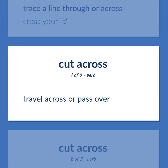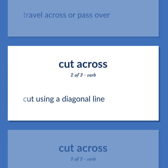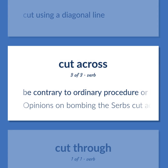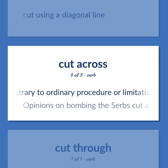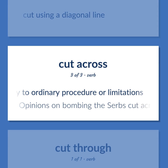Cross (verb): Travel across or pass over. Cut using a diagonal line. Be contrary to ordinary procedure or limitations — opinions on bombing the Serbs cut across party lines.